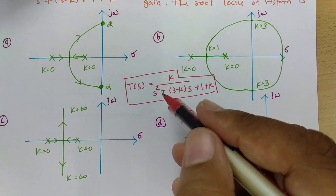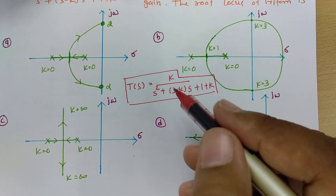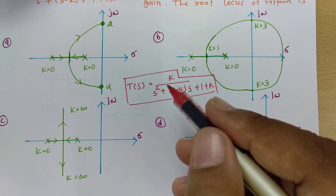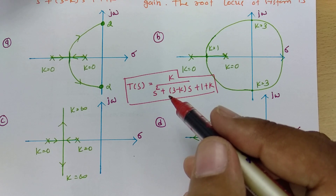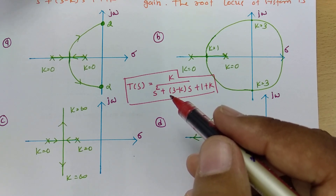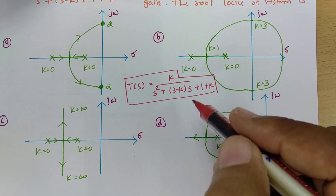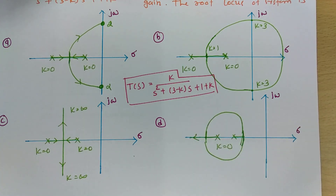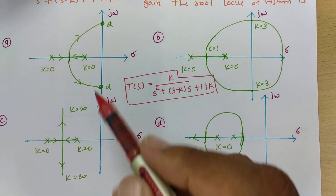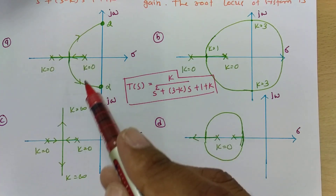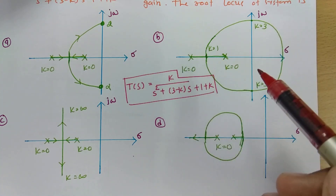We cannot draw the root locus using the basic process here because that would take probably 15 to 20 minutes. We will not follow that procedure since it takes too much time in the GATE examination. Instead, based on observation, we need to identify the answer. By observing the four root locus diagrams, we can find the position of poles and where they intersect.